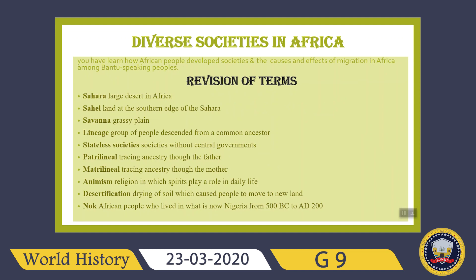In the lesson on diverse societies in Africa, you learned about African people who developed societies and the causes and effects of migration among Bantu-speaking people. The Sahara is a large desert in Africa. The Sahel is the land at the southern edge of the Sahara. Savanna is a grassy plain. Lineage is a group of people descended from a common ancestor. Stateless societies are societies without a central government. Patrilineal means tracing ancestry through the father, and matrilineal means tracing ancestry through the mother.